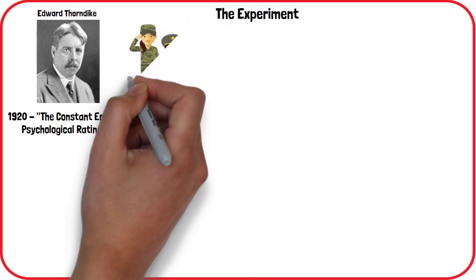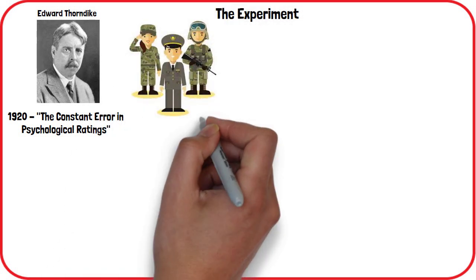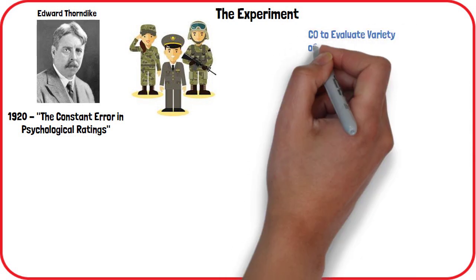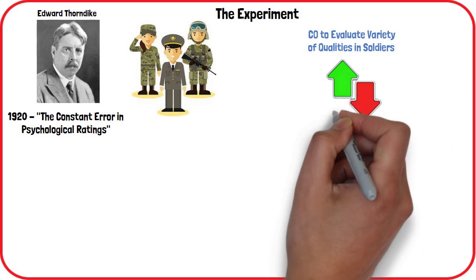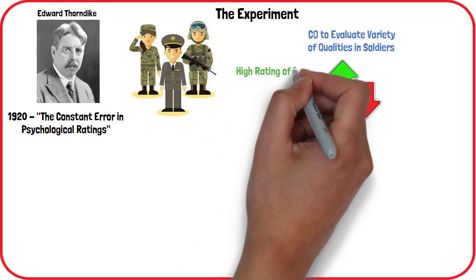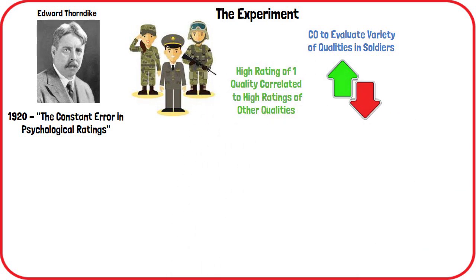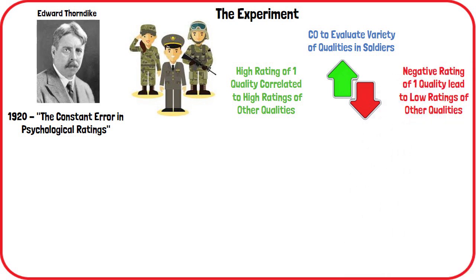In the experiment described in the paper, Thorndike asked commanding officers in the military to evaluate a variety of qualities in their subordinate soldiers. He found that high ratings of a particular quality correlated to high ratings of other characteristics, while negative ratings of a specific quality also led to lower ratings of other characteristics.